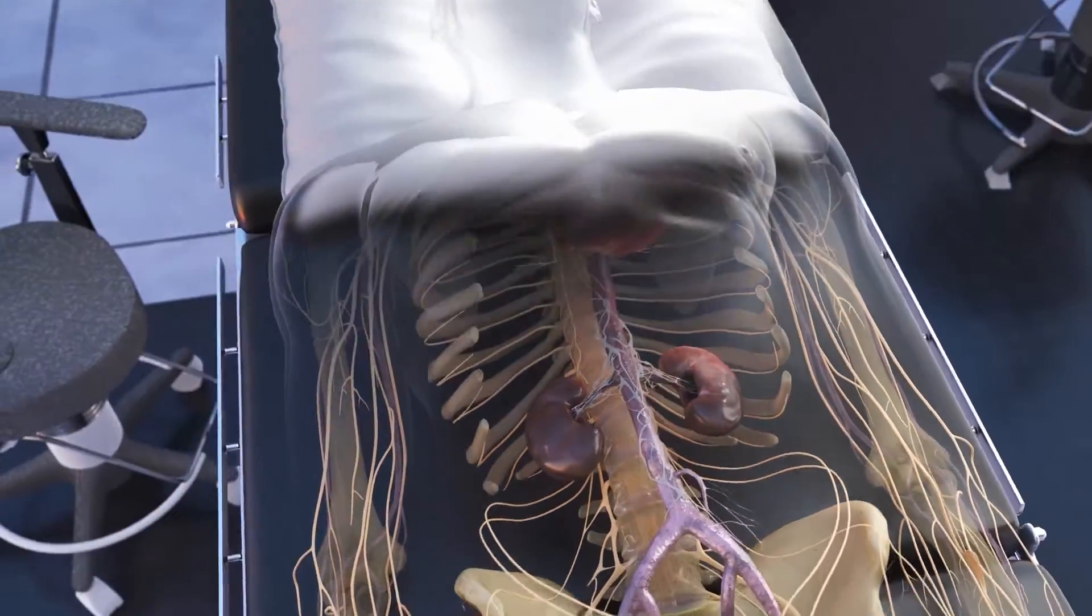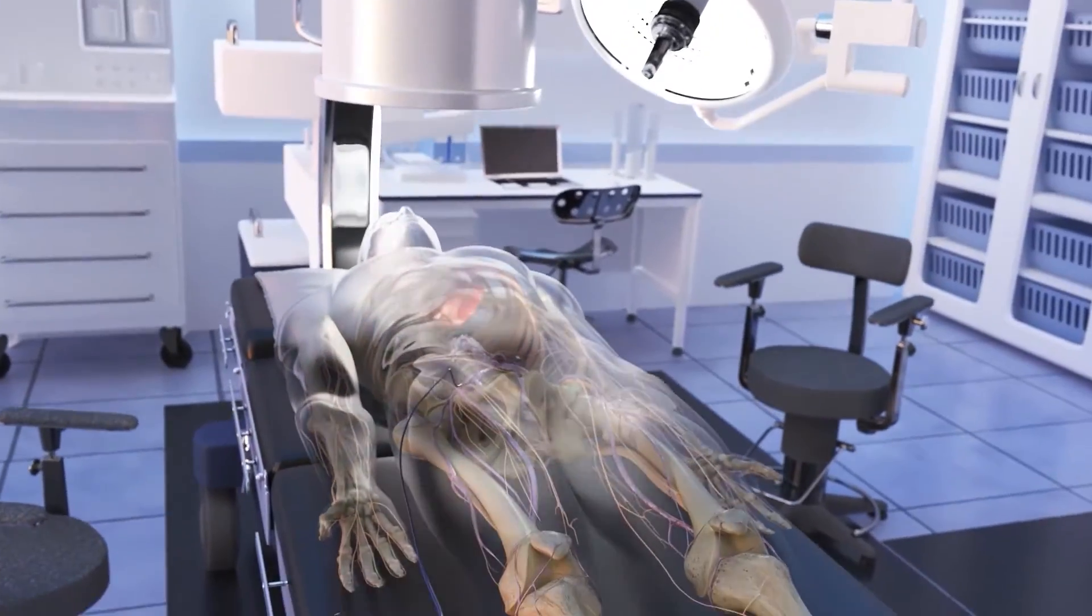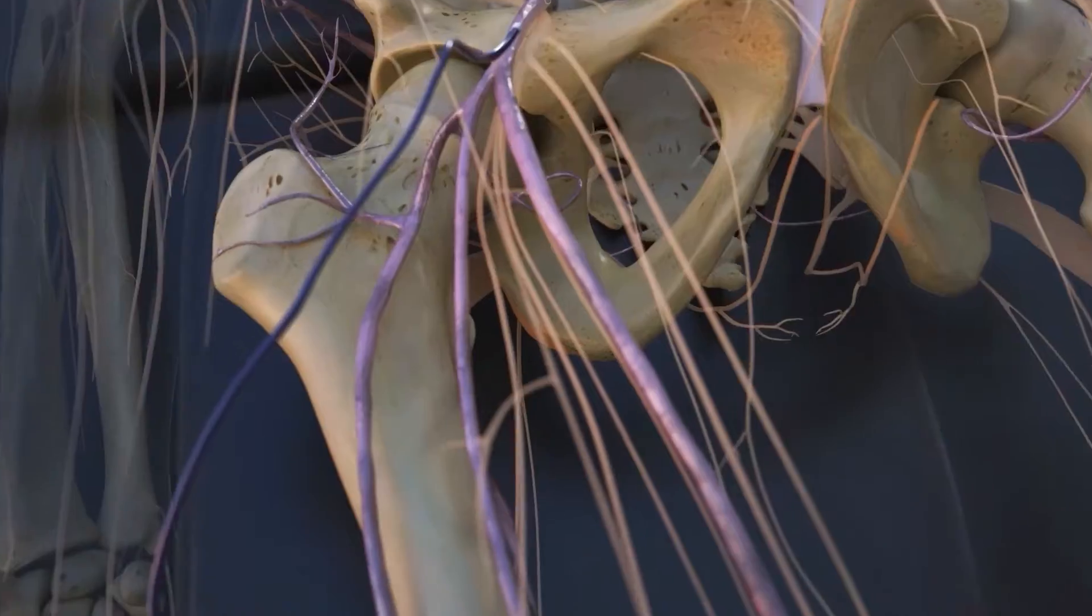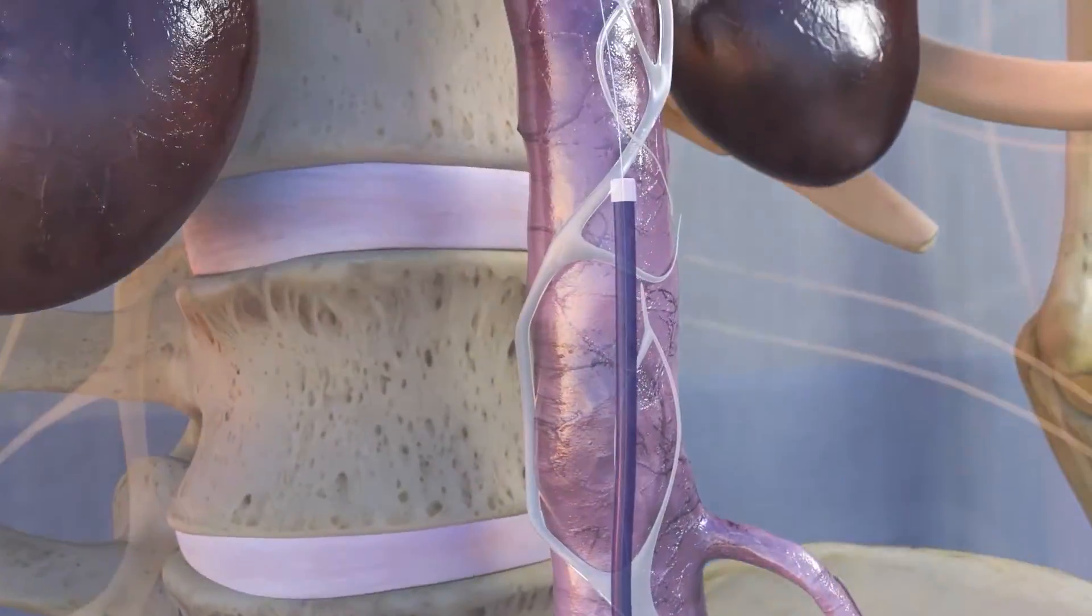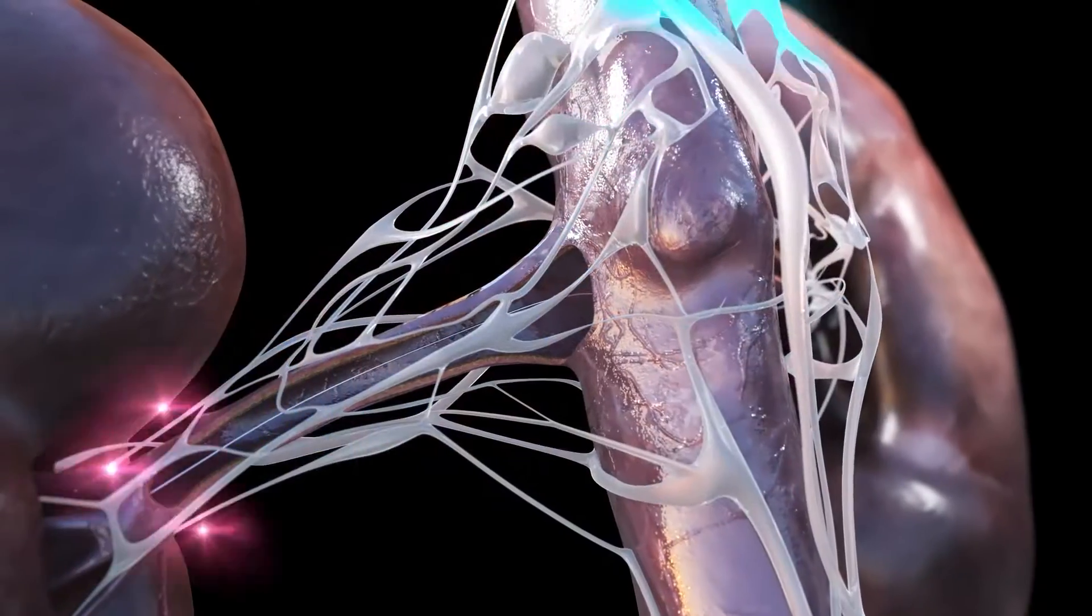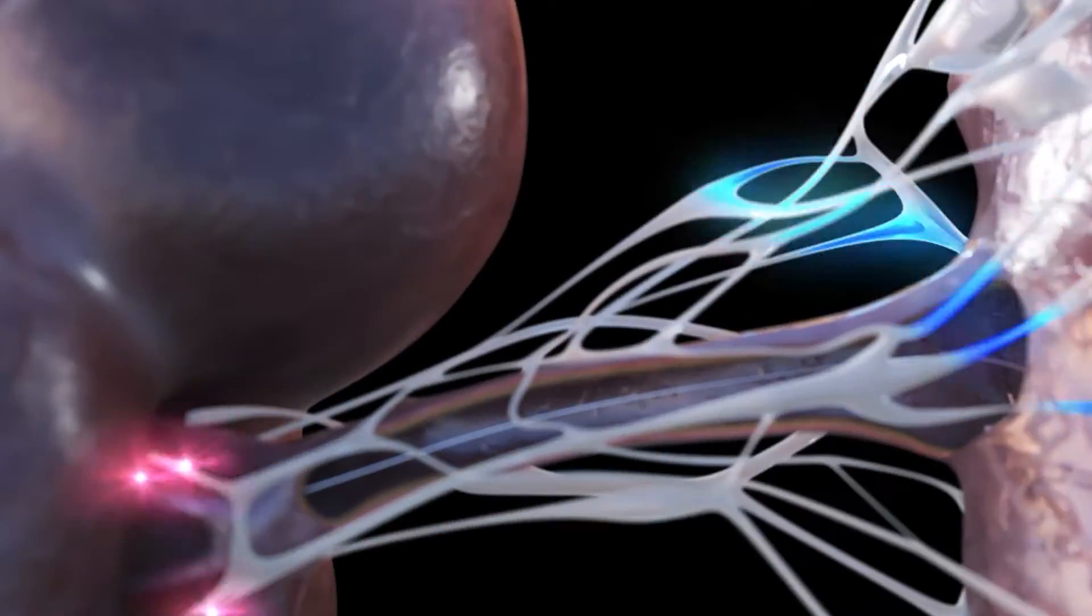Typically performed in a catheterization lab, the Paradise procedure begins with access to the aorta through the femoral artery. The procedure is performed in the main renal arteries where there is a high concentration of nerves just outside of the arterial wall.